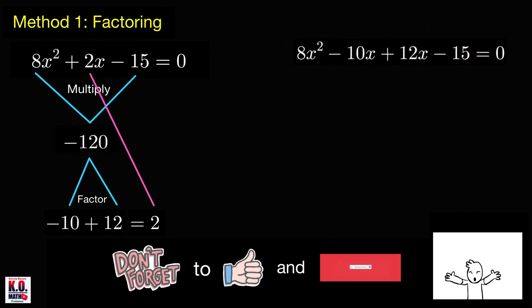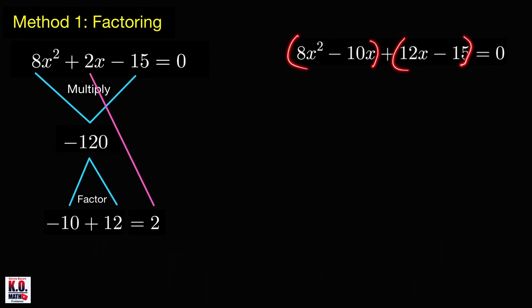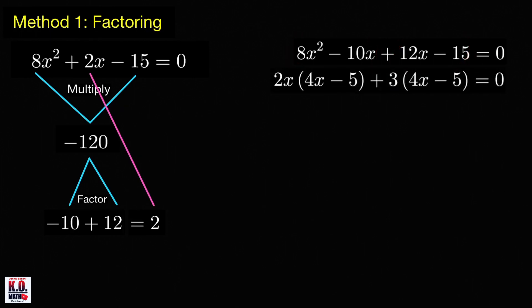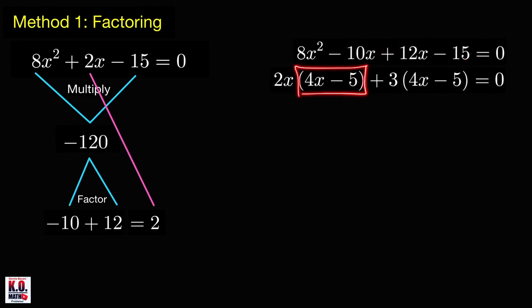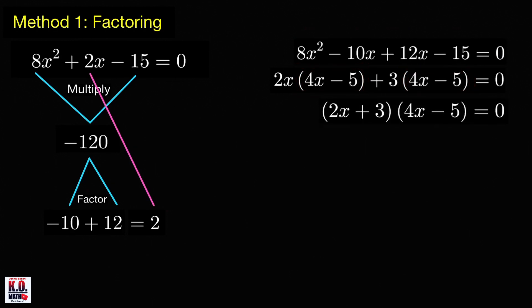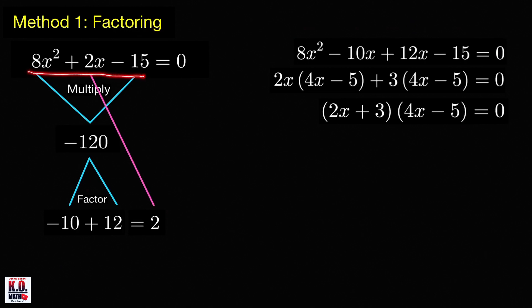We're going to group the first two terms and then the last two terms, and these groups will produce a common factor. So we can write the left-hand side as 2x times the quantity (4x minus 5), plus 3 times the quantity (4x minus 5). Now we see a common factor, which is (4x minus 5). Factoring this out gives us the factorization: (2x plus 3)(4x minus 5). If you want to learn a fast and easy way to factor trinomials, I have a video on my channel — click the information icon at the upper right corner.